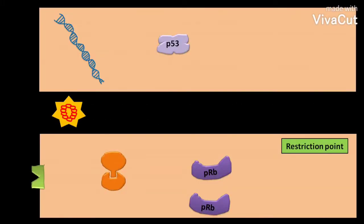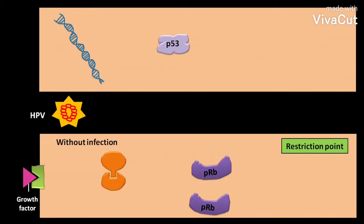Let us consider a case in which the receptor present on the human cell, with no infection of human papillomavirus or HPV, binds to a growth factor. This binding of the growth factor stimulates the CDK cyclin. The stimulated CDK cyclin causes the phosphorylation of a tumor suppressor protein called retinoblastoma protein, or PRB.